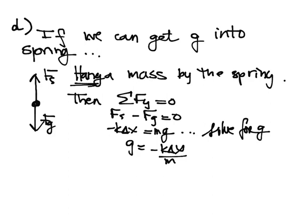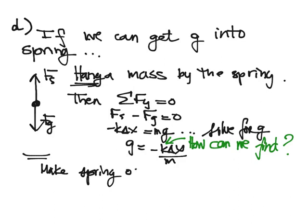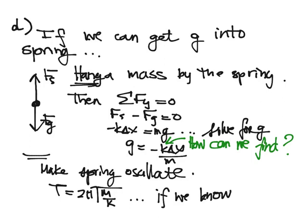Okay, you might say, oh, well, what about k? And so, how can we find this? And the answer is make the spring oscillate. Since we know t equals 2π square root of m over k, if we know m and we measure the period, we can find k.